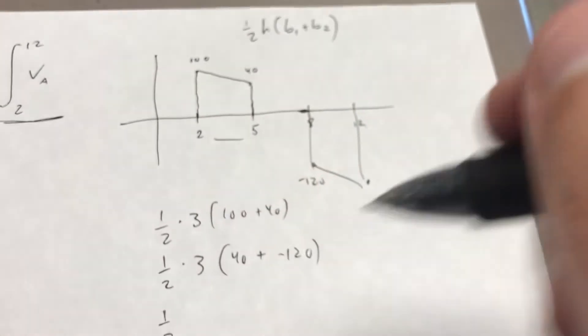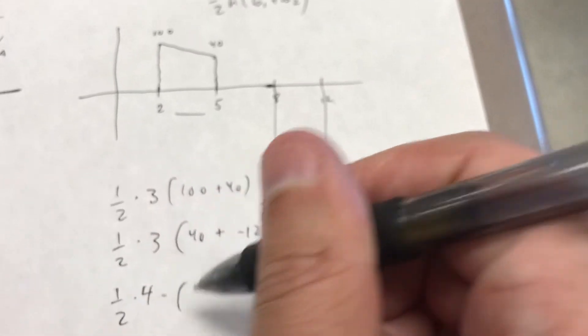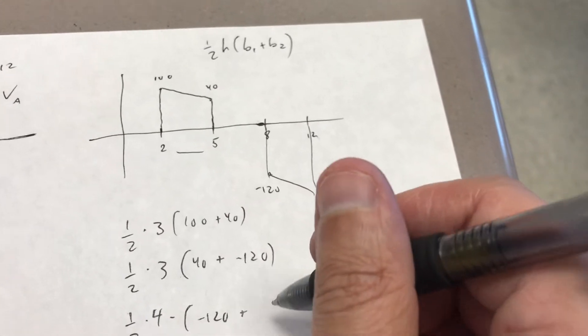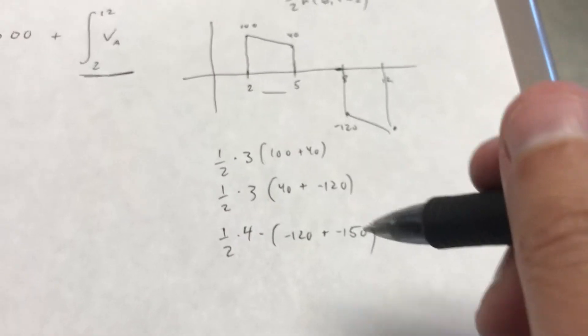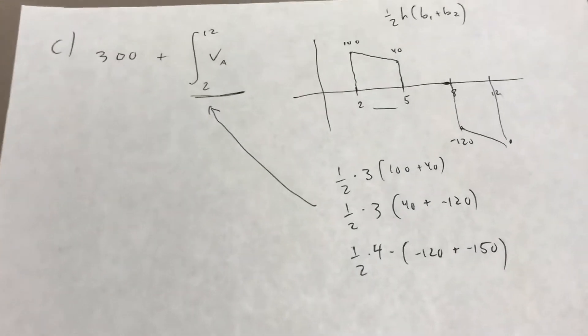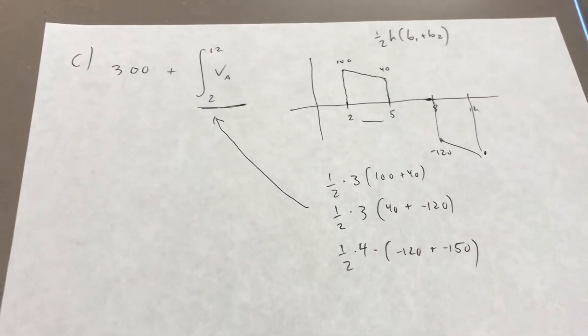And then of course you can see your third trapezoid right there. You can do one half. Be careful there, 8 to 12, that's going to have a height of 4, and then you're going to have negative 120 plus negative 150. And remember, when you add all that up, you're going to need to add that to the original 300. So I'll let you finish that, but I just thought that was a case where the strategy that I've normally suggested maybe was kind of confusing.